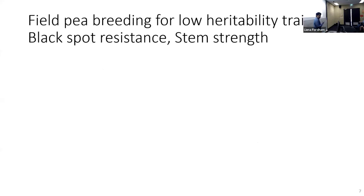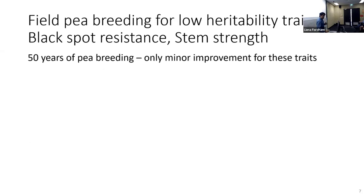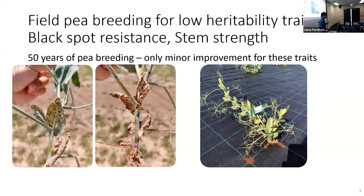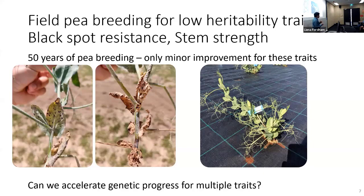I've been working with field peas, focusing mainly on two traits: black spot resistance and stem strength. In almost 50 years of pea breeding, only minor improvements have been made on these two traits. Black spot, also known as Ascochyta blight, is still a serious disease affecting many regions, causing damage up to 30% of yield, and there is no major resistance in the germplasm. As for stem strength, peas still tend to go flat on the ground and lodge when they mature. We want to know if we can accelerate genetic progress for these traits.